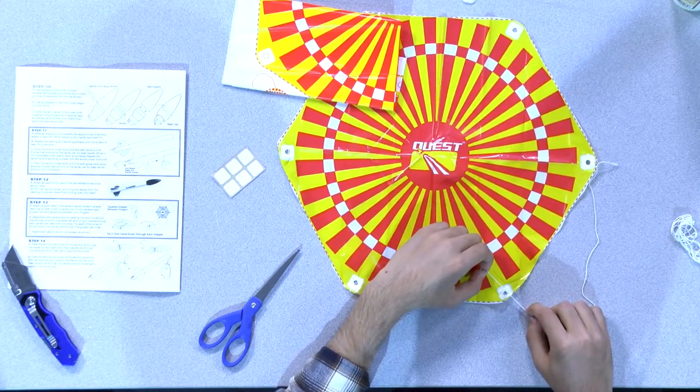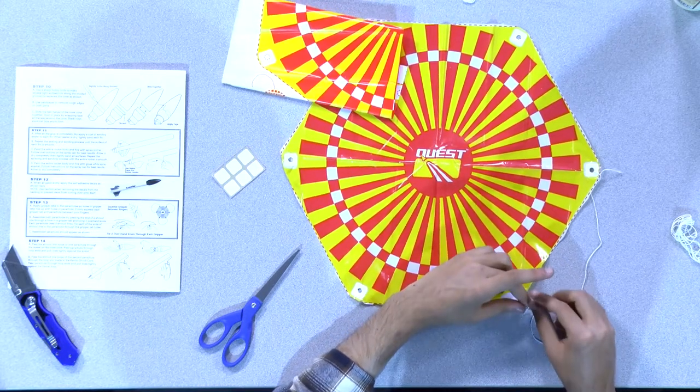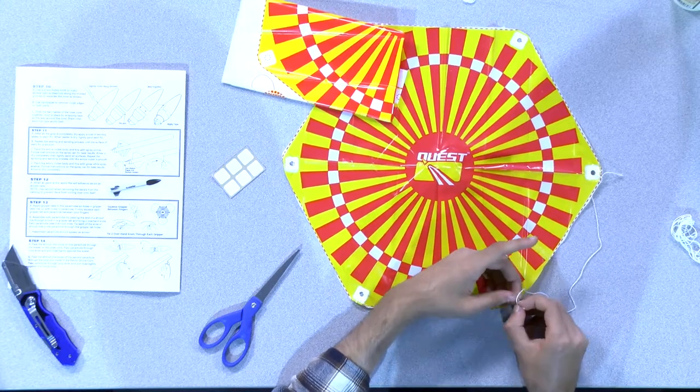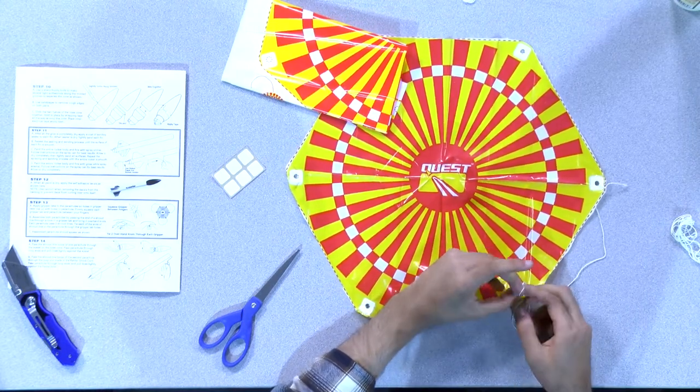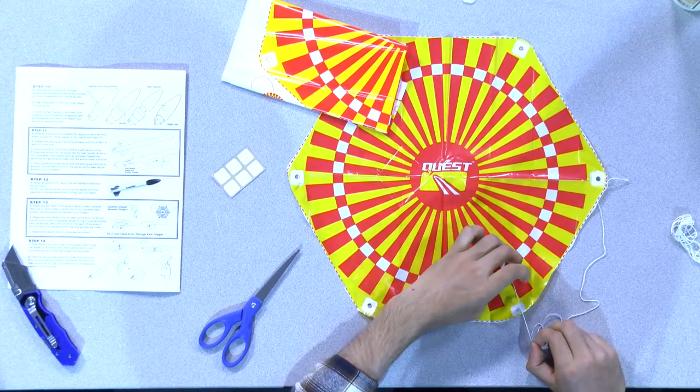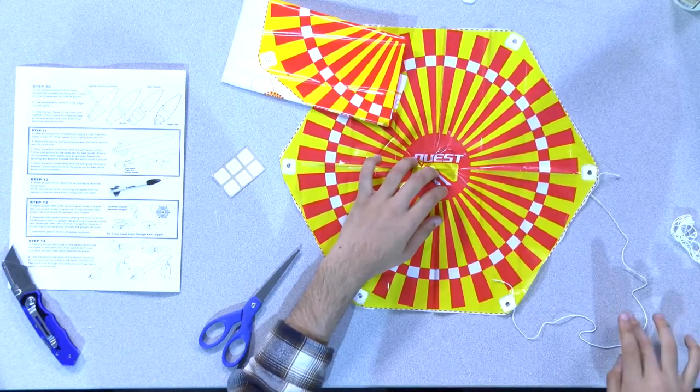Take the other end of the string. So again, we just do the same thing for each end of the parachute.